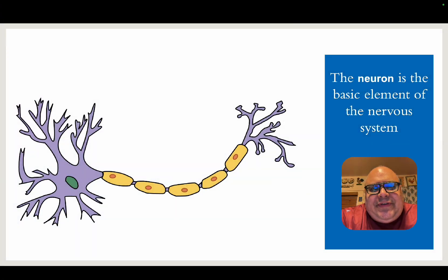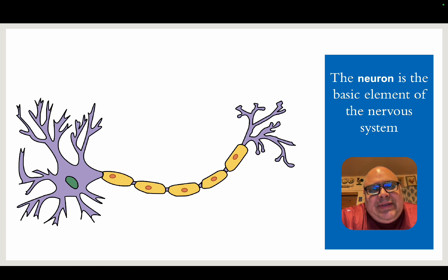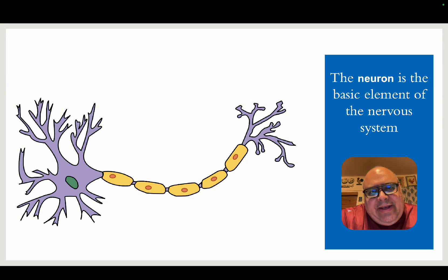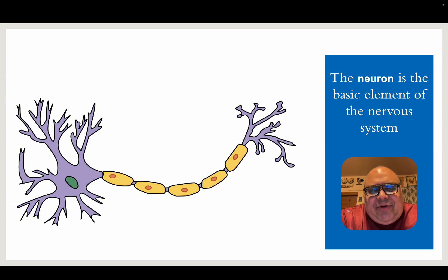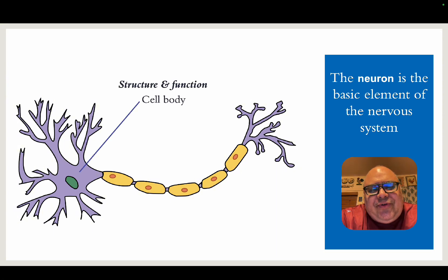The basic element of the nervous system is the neuron. A neuron is just another term for a nerve cell. Some neurons will be located in the brain, others in the spinal cord. Others can be found in other parts of our body — we have nerve cells all over our bodies. But in general, they're going to have a very similar structure. We'll look at the structure and function of this example neuron.